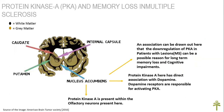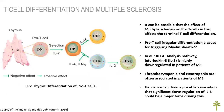This diagram shows a diagrammatic representation of where protein kinase A is present and what direct effect it has with dopamine. Dopamine loss causes downregulation of protein kinase A at the transcriptomic level, which could be a possible cause for the loss of cognitive impairment and memory loss in multiple sclerosis patients.